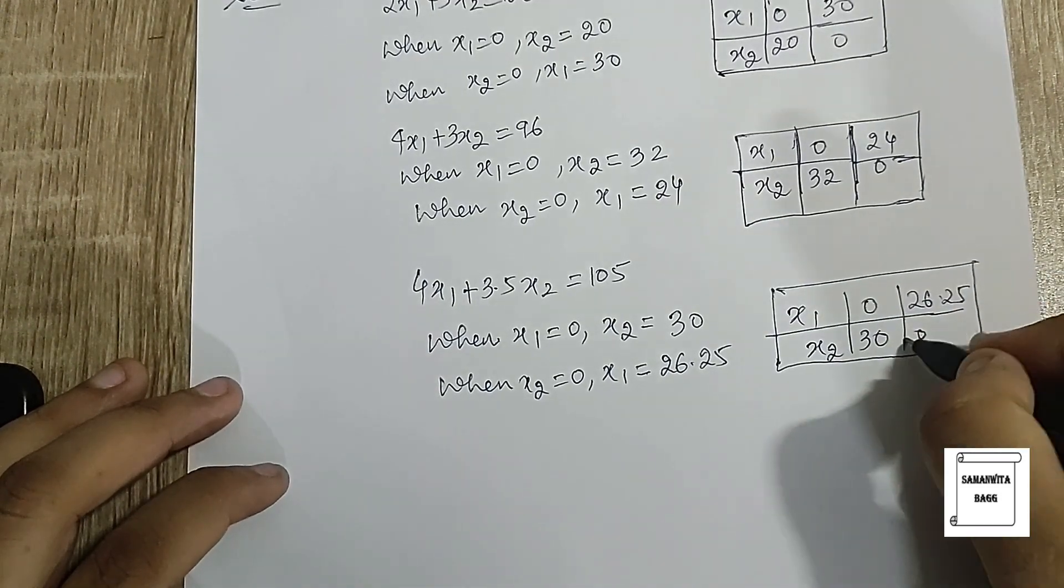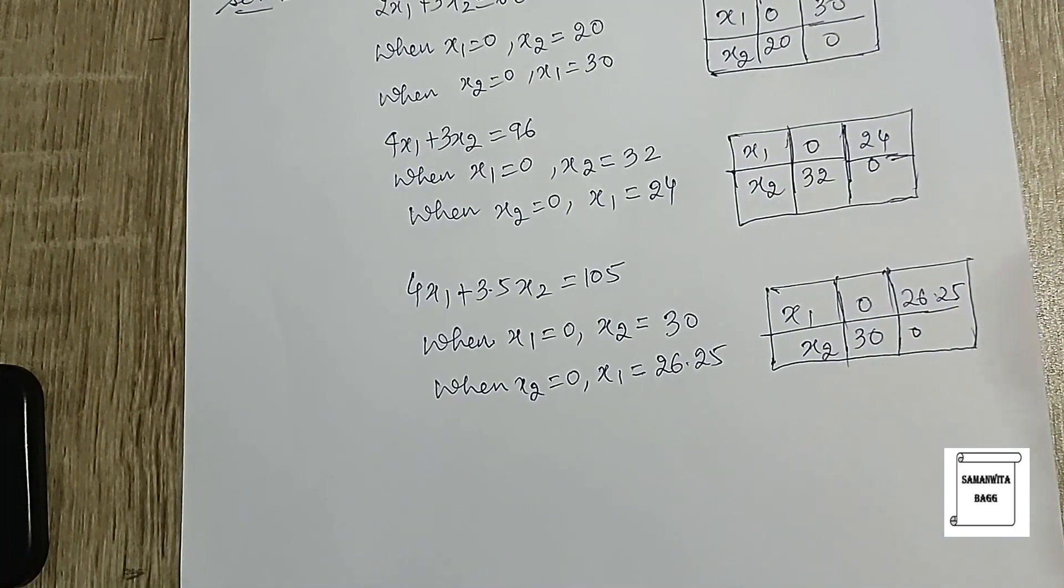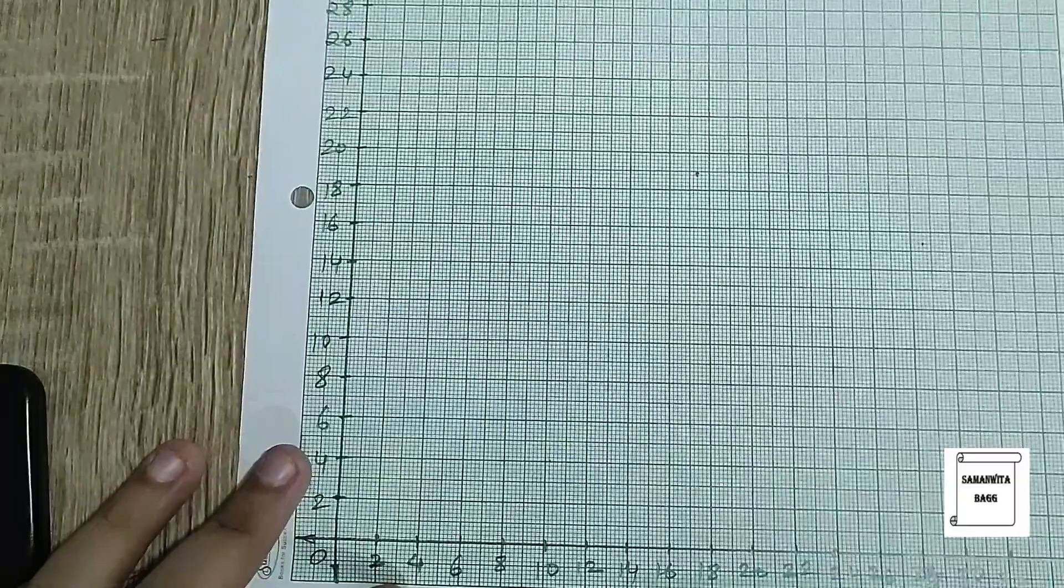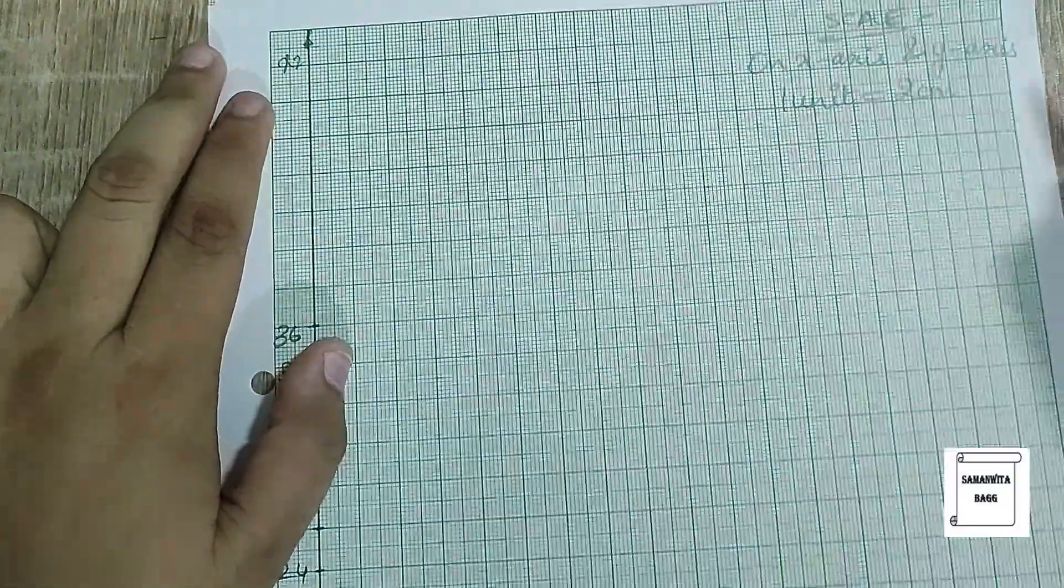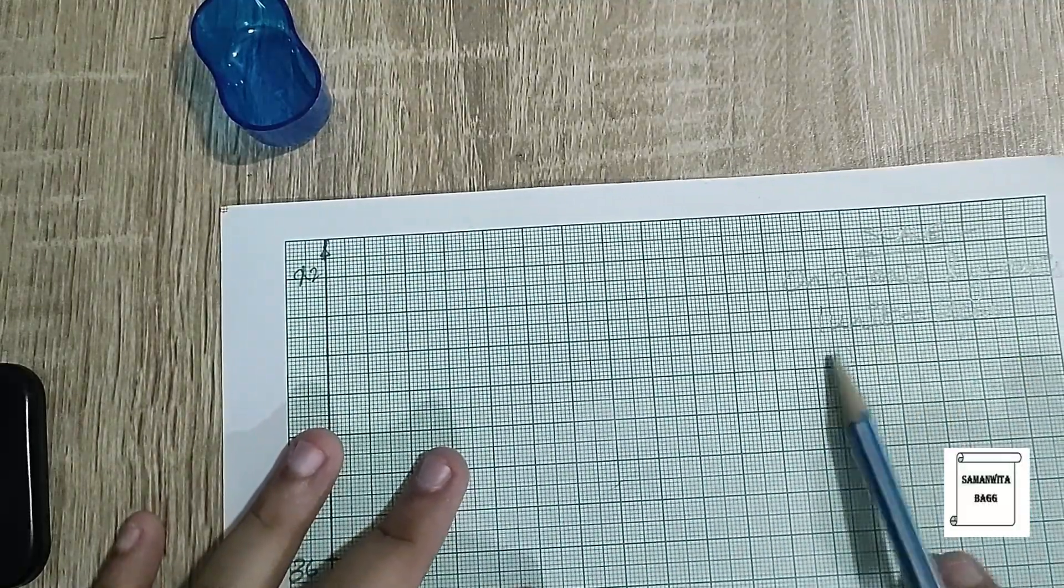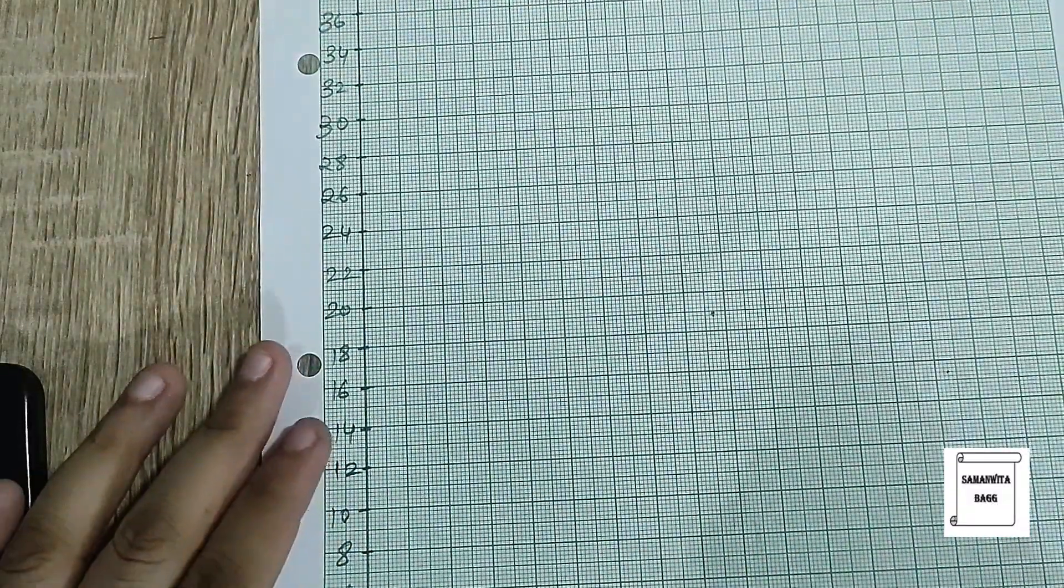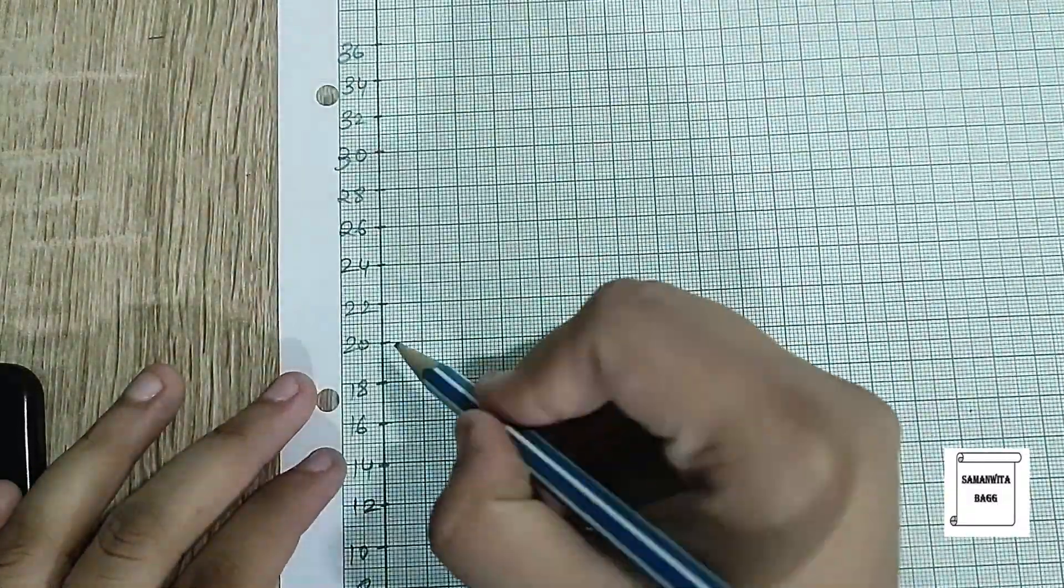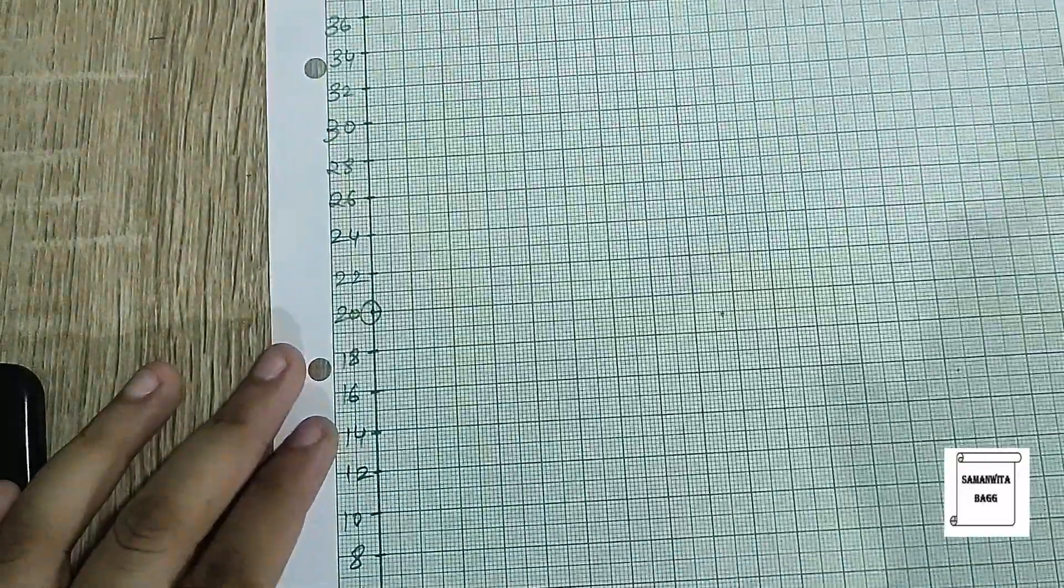These are the two points from this equation. So now let's plot these points on the graph paper. Here I have marked the x-axis as x₁ and the y-axis as x₂. On both axes I have taken one unit as 2 cm. I will start plotting the points. The first point is (0, 20) and (30, 0).